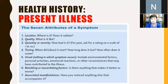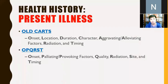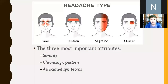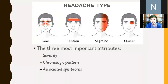You always have to ask the seven attributes of a symptom — the OLD KAARTS: onset, location, duration, characteristics, and the rest. The three most important attributes of headache are severity, the chronological pattern, and associated symptoms. What came first — was the patient dizzy before the headache, or did the headache come first? Did the patient skip a meal before the headache?